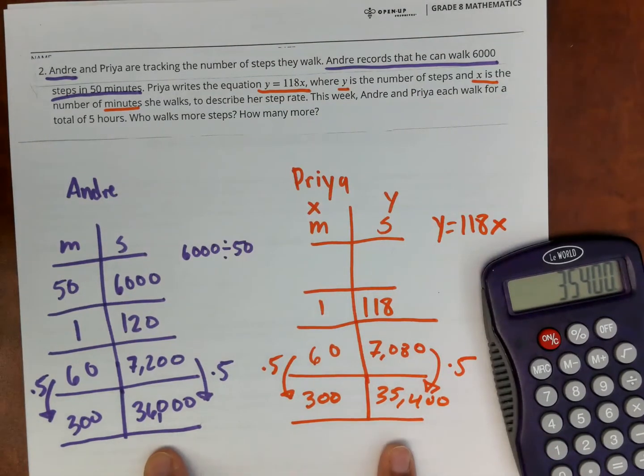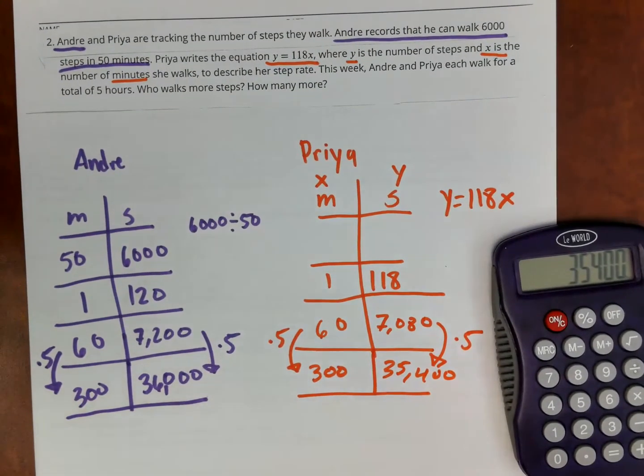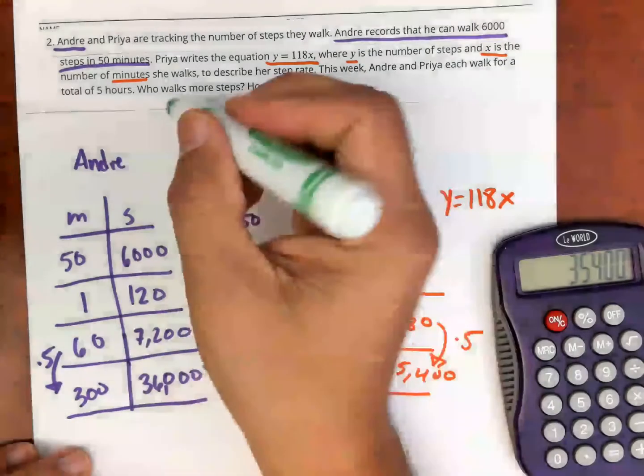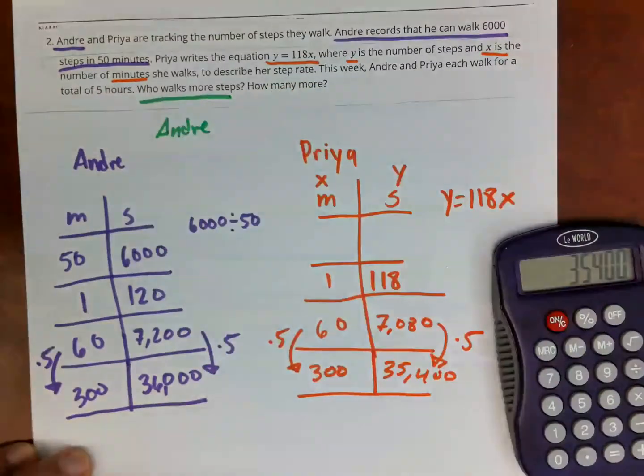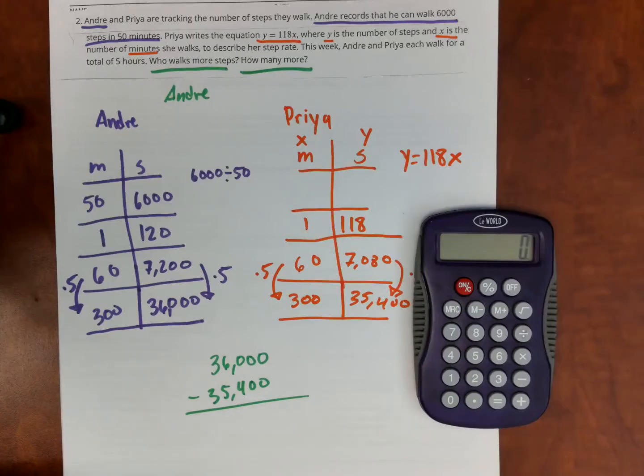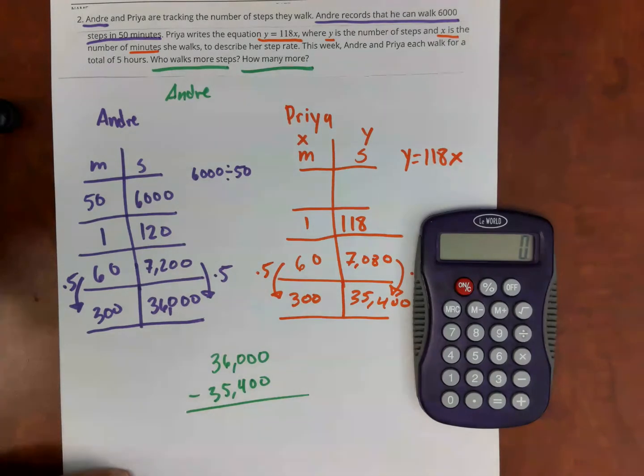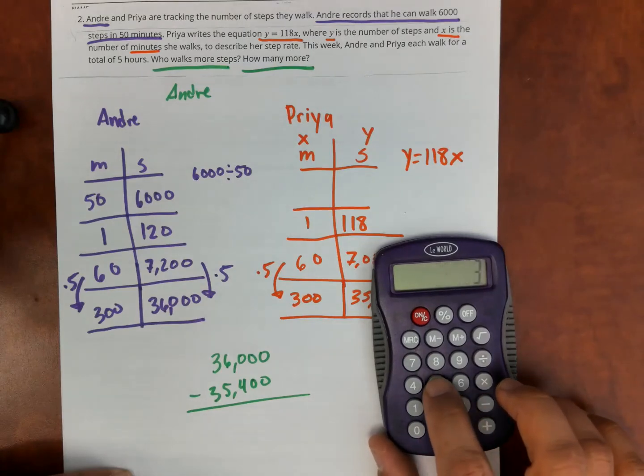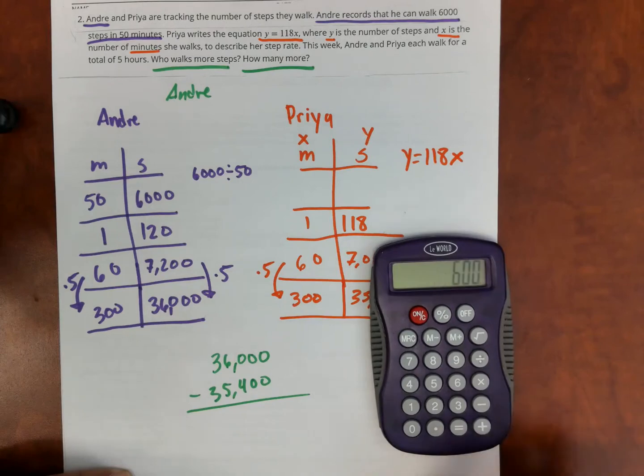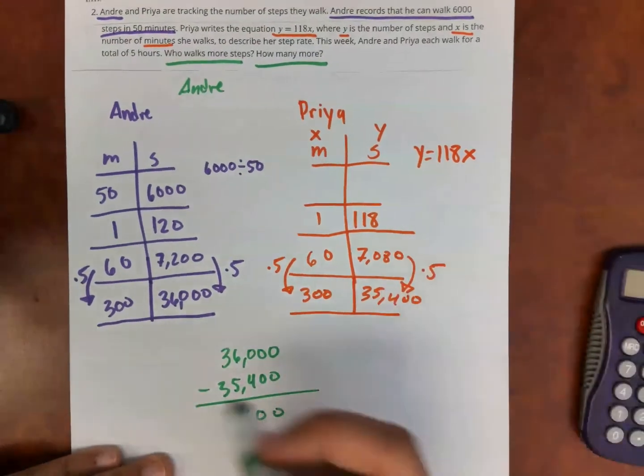So now I know what each person does in five hours. Andre does more. How much more to see how many more steps. So we know this one right here. Who walks more? Andre walks more. So to find out how many more steps Andre takes, I'm going to do this subtraction here. 36,000 minus 35,400, which is 600 more. So Andre does 600 more steps.